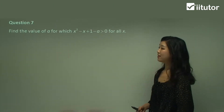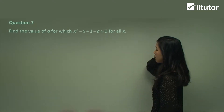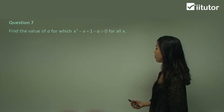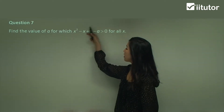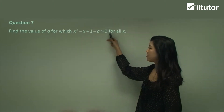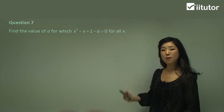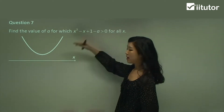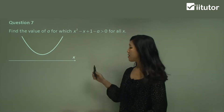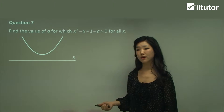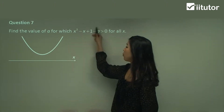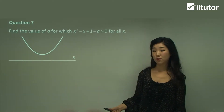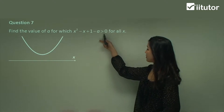Starting with question seven: find the value of a for which x² - x + (1 - a) is greater than zero for all x. If this whole quadratic function is greater than zero, that means above the x-axis. For y to be greater than zero, it must be floating above the x-axis — that's why it must be a positive definite function in this case. Have a look at the sign there and try to draw a diagram if you'd like.